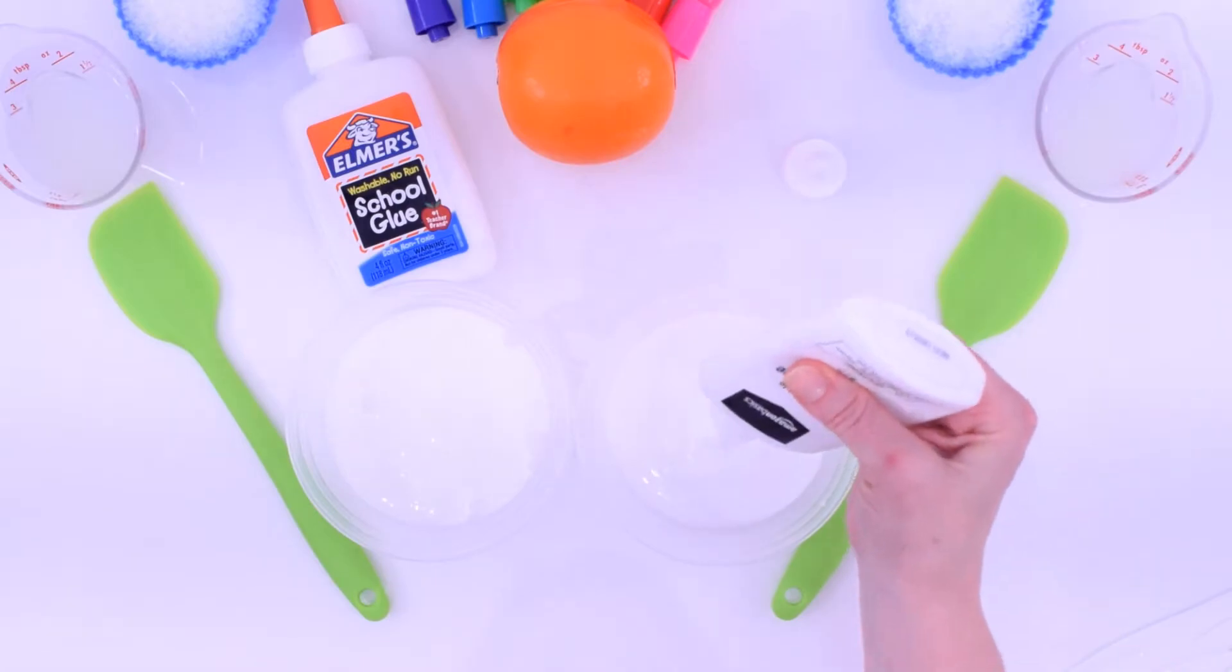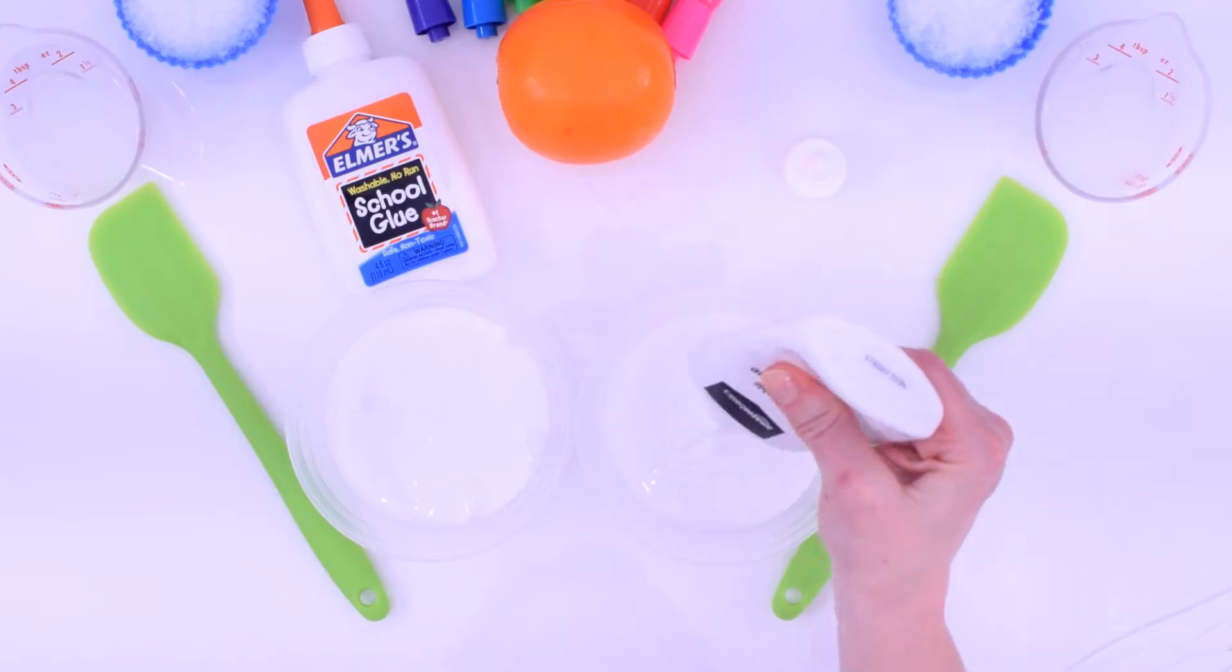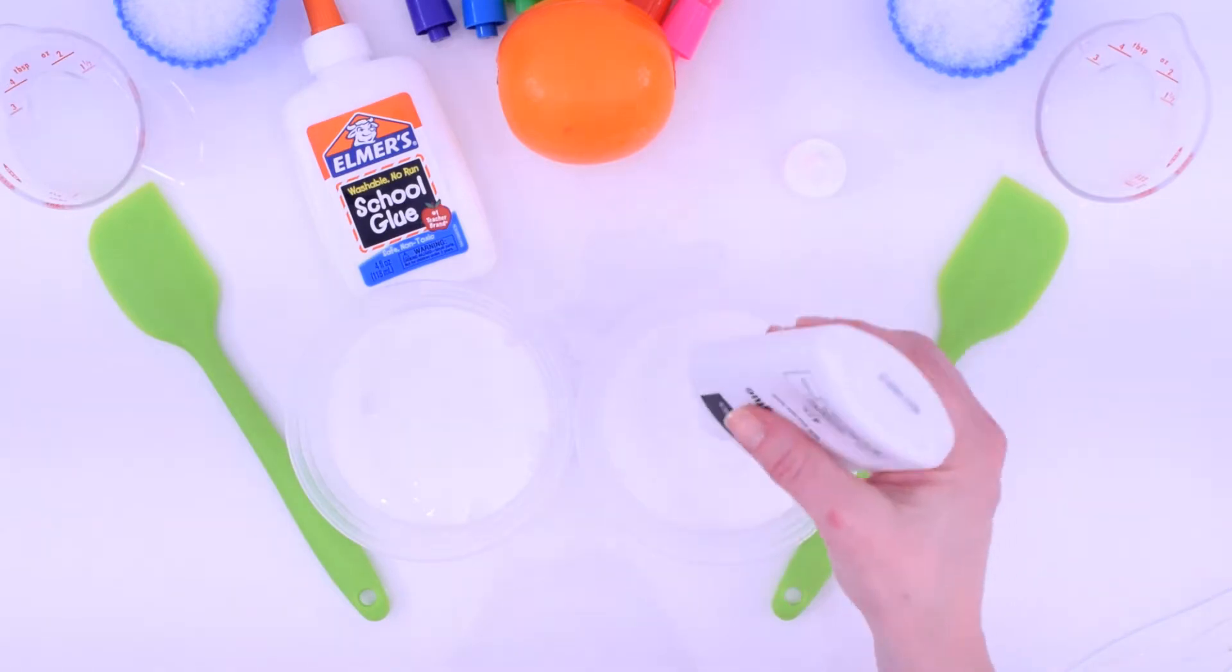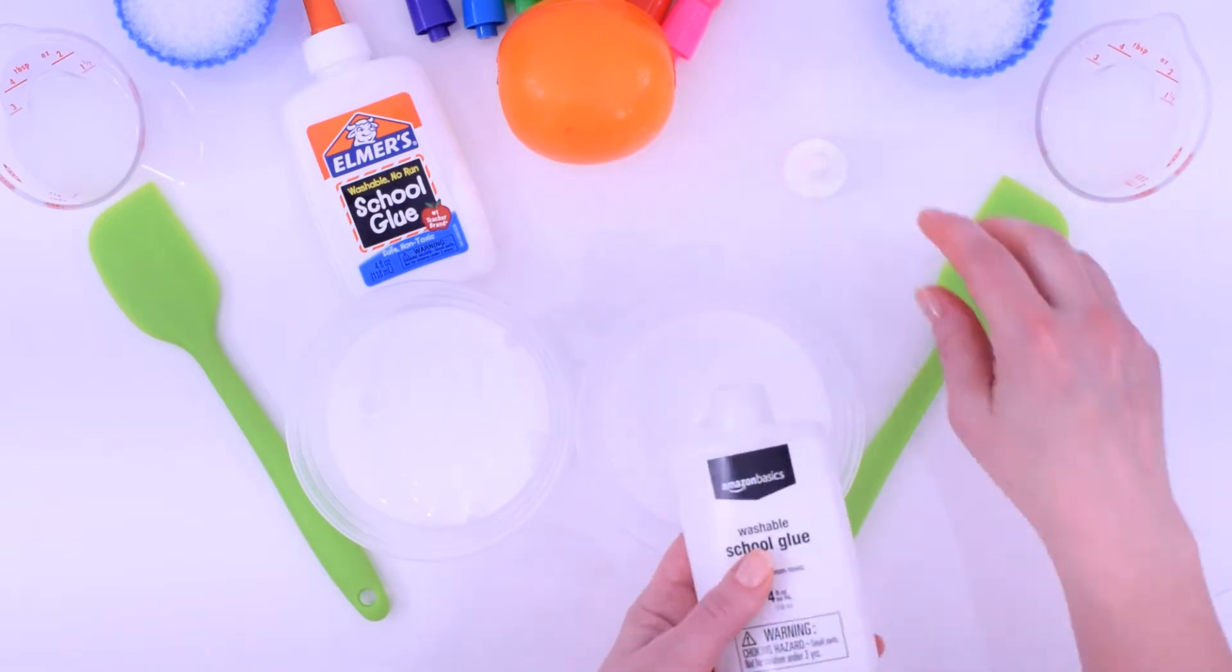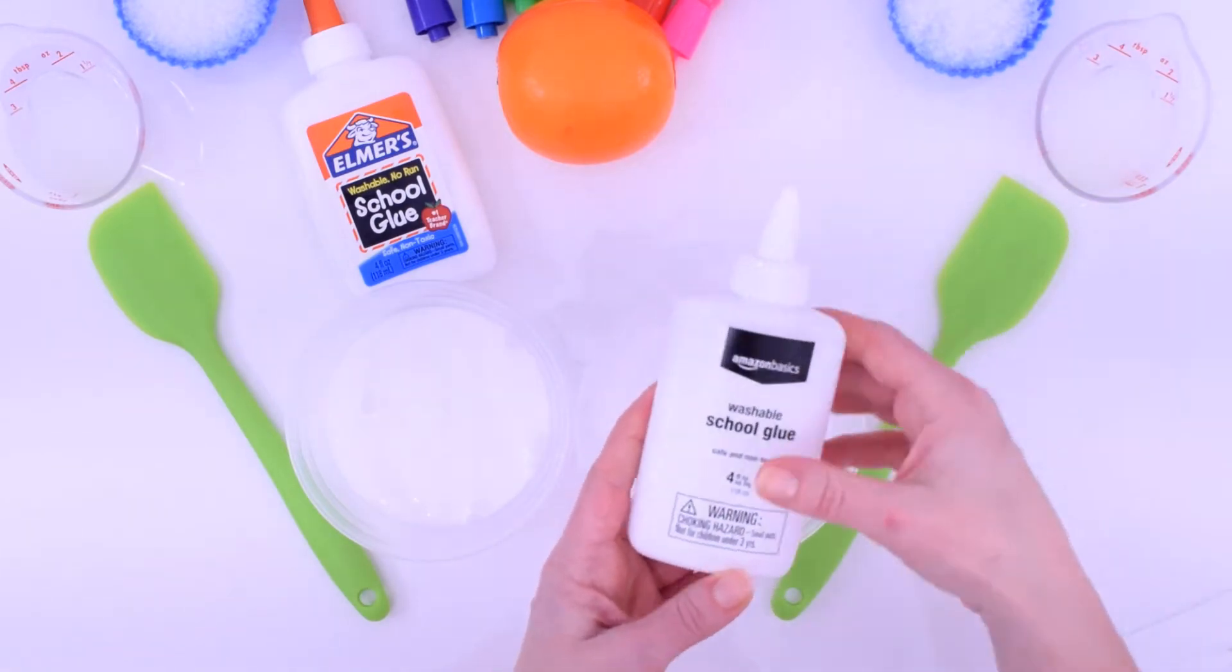Right off the bat, the consistency of Amazon's glue is actually very, very similar to Elmer's glue, which is surprising. Elmer's is made in the United States, at least their white glue is, and this Amazon glue is made in China.